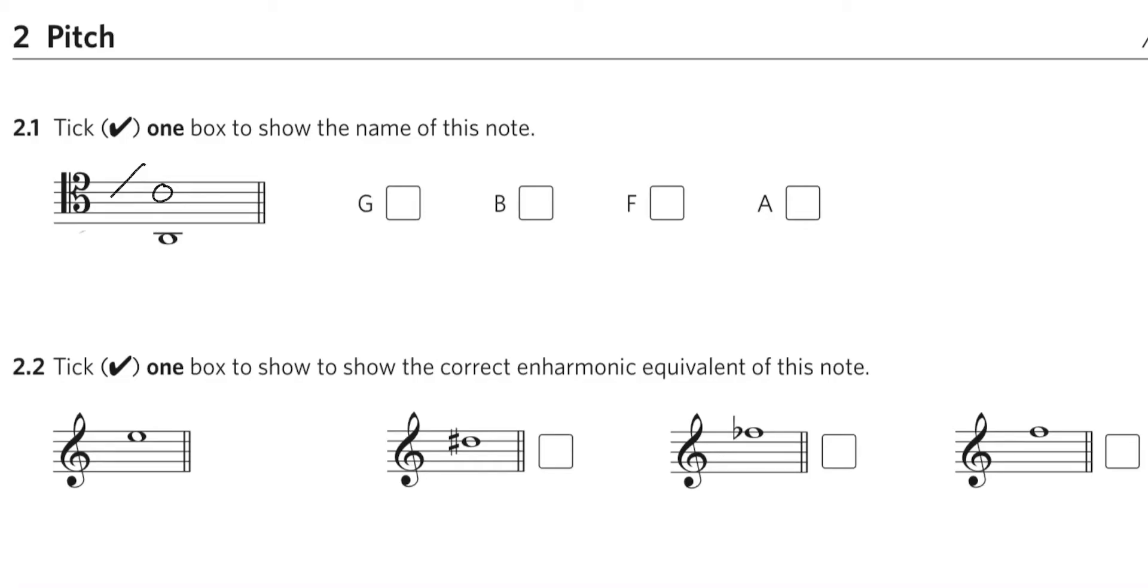Having worked out that that is middle C, you can then work your way down to the given note. So the next line down, the middle line, will be two below middle C, it will be A. The next line down, the next to the bottom line, will be two below A, so it will be F. The bottom line will be two below F, so it will be D.